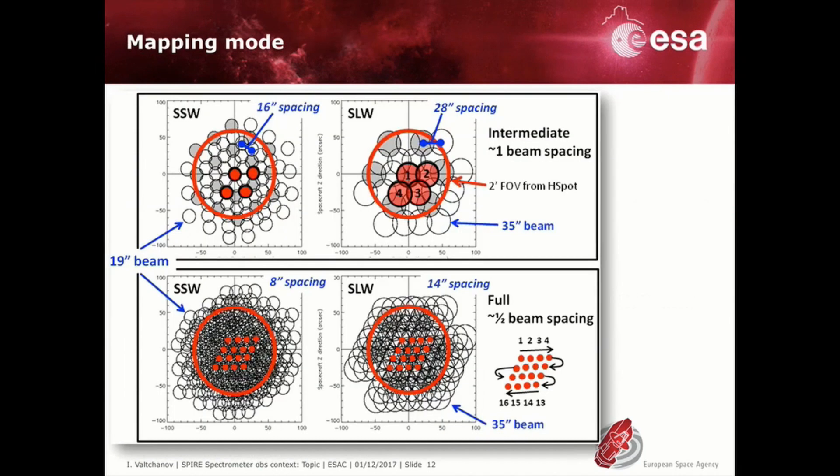In the mapping mode hyperspectral cubes are built by repeating the sparse mode pattern on 4 or 16 predefined positions called jiggle positions. These are the intermediate or full spatial sampling modes. The individual spectra from all the detectors are then projected on a regular sky grid and this is your resulting spectral cube.